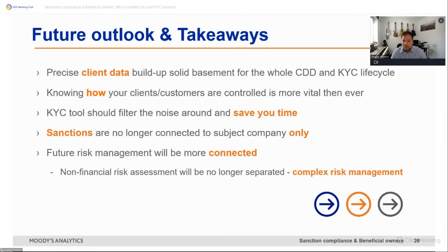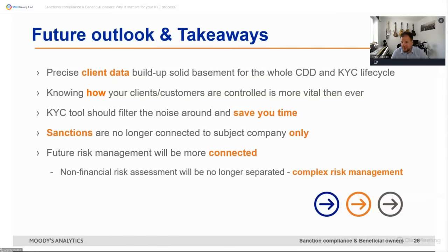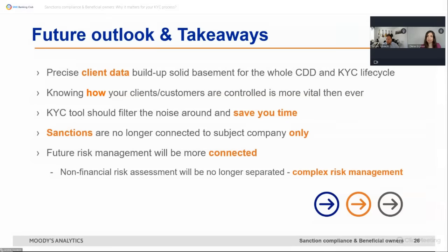In summary and takeaways: ownership structures and sanctions are growing more complex, and KYC compliance requires more time and money. It is essential to examine the whole ownership structure, not just the subject company, and to monitor constantly. Automation is very valuable — not just for screening, but for filtering noise and saving time. As client volumes and data volumes grow, the potential lies in automating KYC screening with a scoring model that incorporates multiple risk factors.